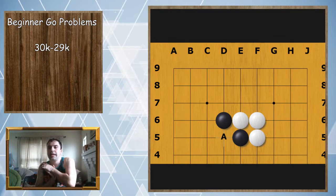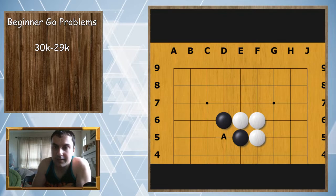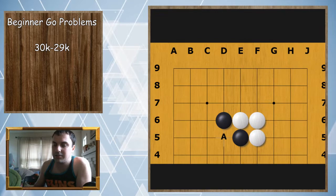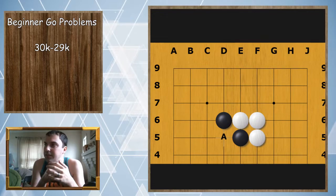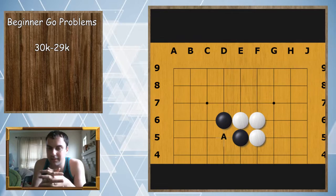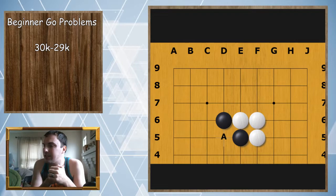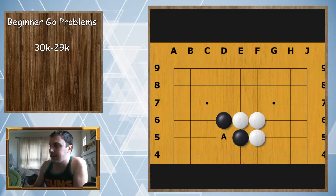That is it for section seven, which is finishing territory. In section eight we are going to talk about cutting your opponent off. Section eight will be the last section of these beginner Go problem videos, at least for now - that's all the problems I've created. Hopefully you guys are finding this series helpful. As always guys, thanks for watching, I hope you guys enjoyed, and I'll see you guys next time.